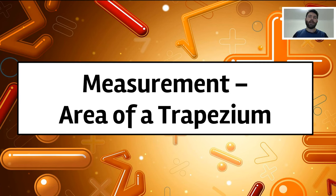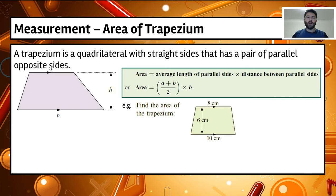Hi and welcome to our next video in our area series which is the area of a trapezium. So a trapezium is a quadrilateral that has straight sides but we have a pair of parallel opposite sides in our trapezium here.